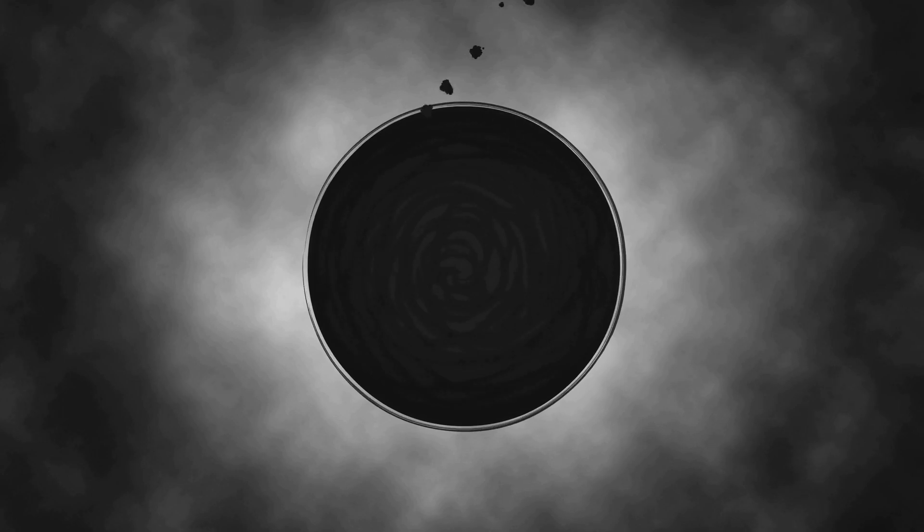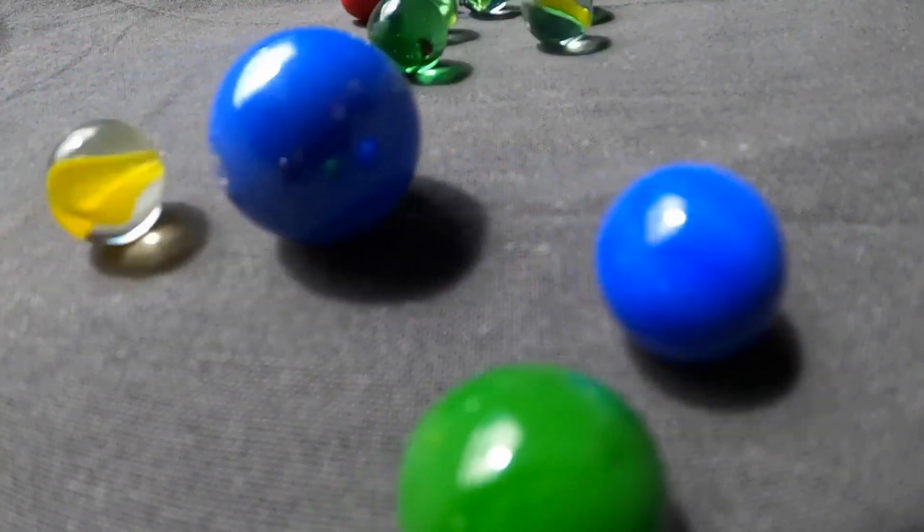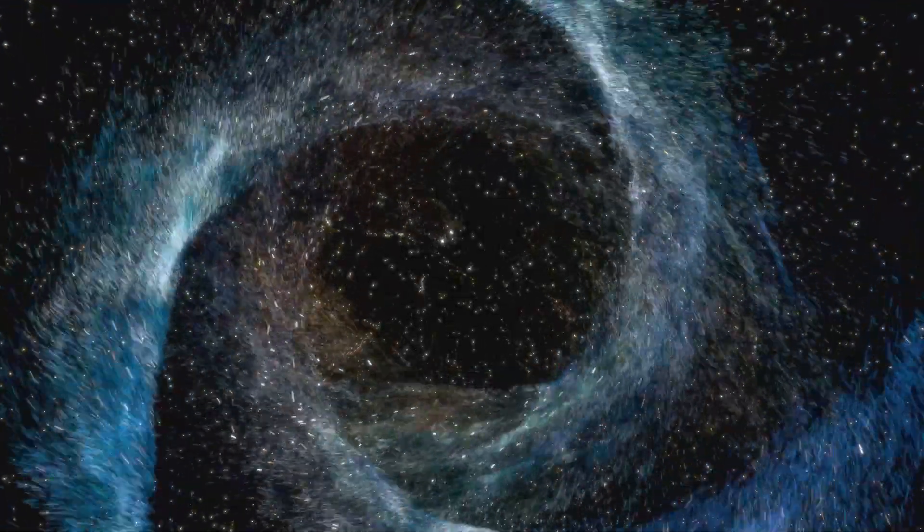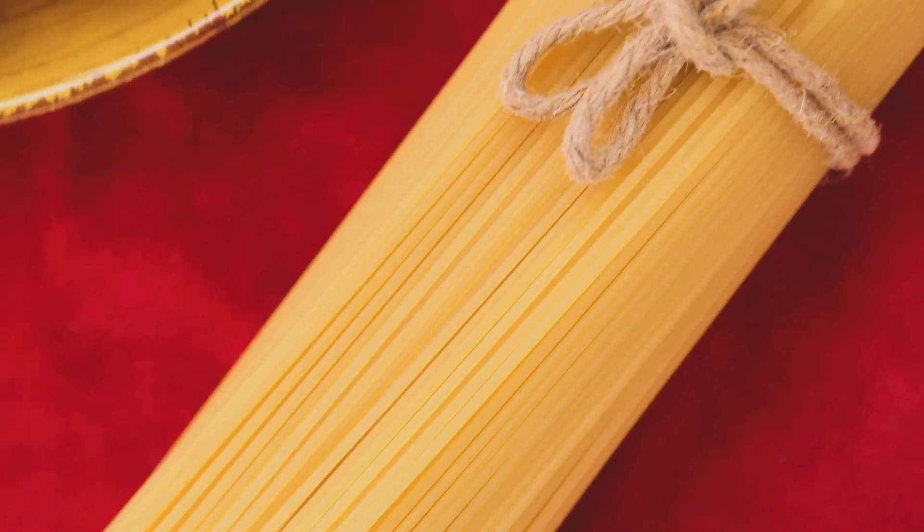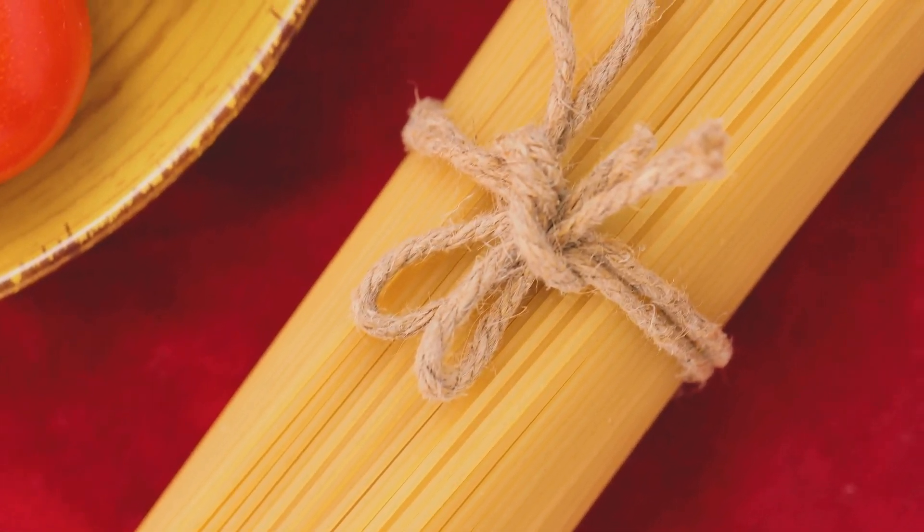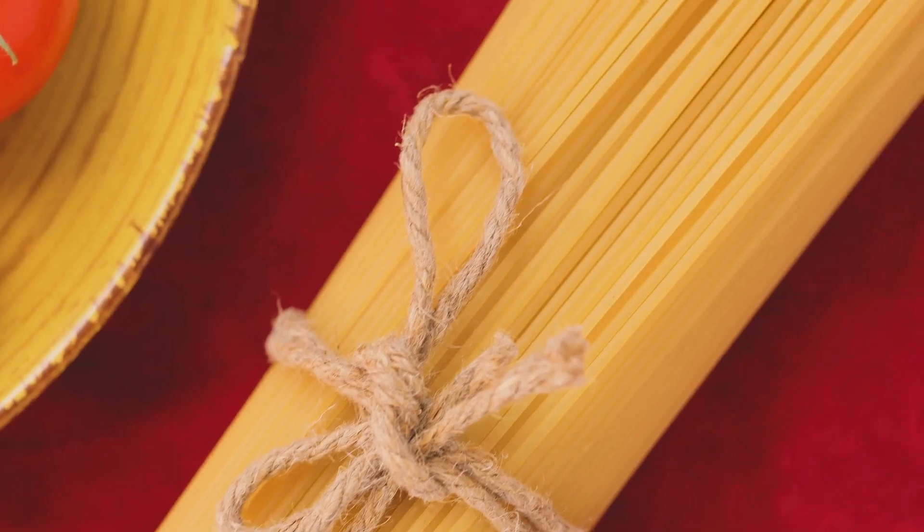These cosmic predators are born from the death throes of massive stars, their cores collapsing in on themselves, creating a gravitational pull so strong that not even light can escape. To get a sense of the power of a black hole, imagine the Earth squeezed into something the size of a marble. That's the kind of density we're talking about. And if you were to get too close to one of these gravitational behemoths, you'd be stretched out like spaghetti by a process terrifyingly known as spaghettification.